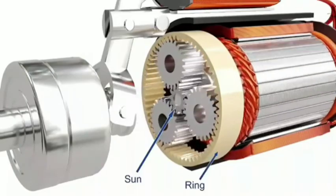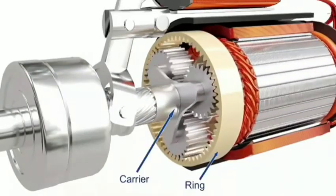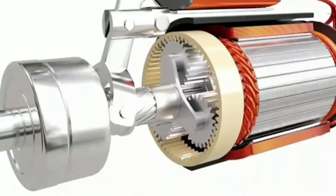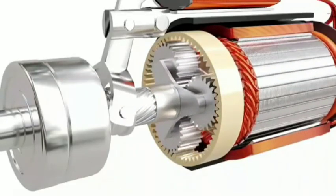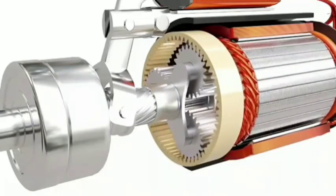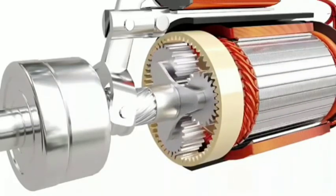In starters, the ring gear is fixed. The sun gear is the input and the planet carrier is the output. For the setup shown here, the gear ratio is 7:1.